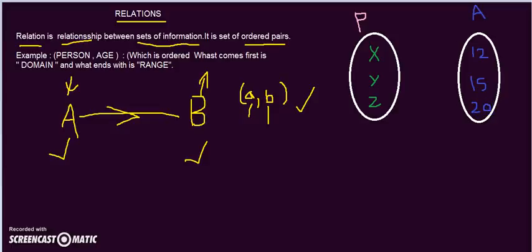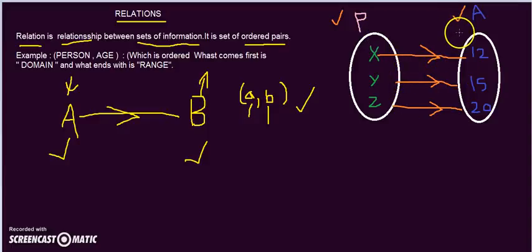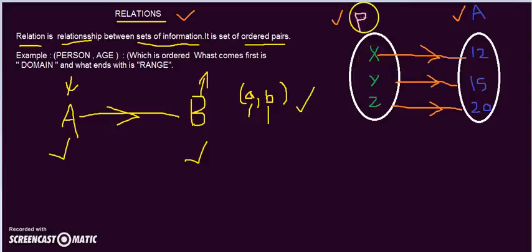So this is the set of persons and this is the set of ages. I have a relation: person X has age 12, person Y has age 15, and person Z has age 20. If I define a set which captures the relation between these two sets, that is our relation. We define the relation as a set of ordered pairs, where the first element always comes from the first set and the second element always comes from the second set.